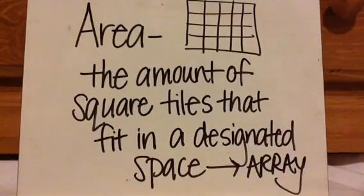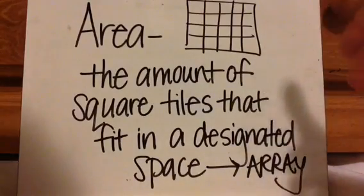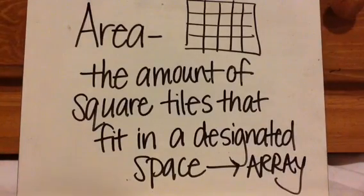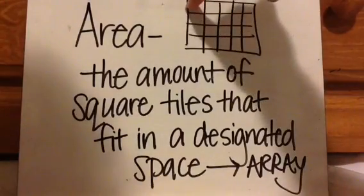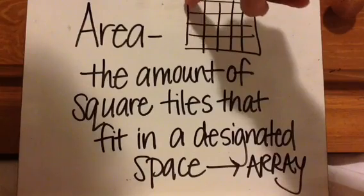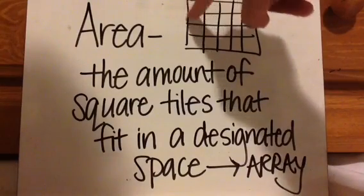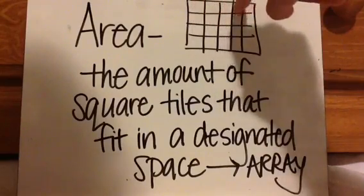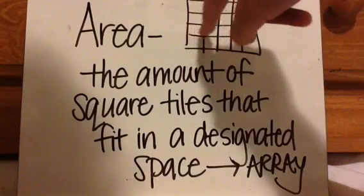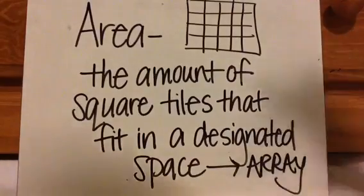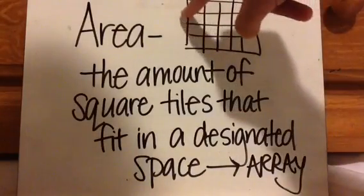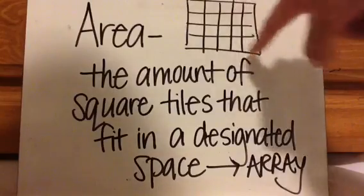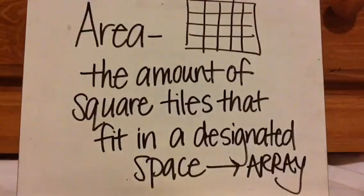In area, we measure in square whatever — so it could be square feet, square centimeters, square inches, square yards. It's like saying that if it was square feet, this is one foot by one foot, so it's like a one by one. How many square tiles that are one foot by one foot can fit in that area? Or if it's yards, this will be one yard by one yard — so how many squares with dimensions of one yard can fit?